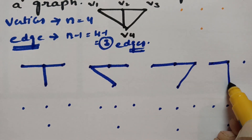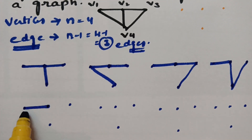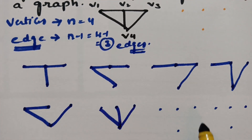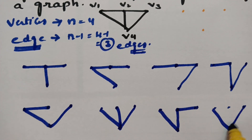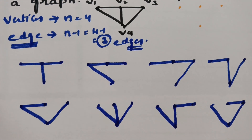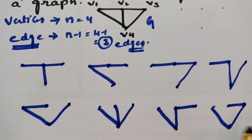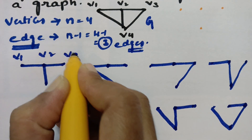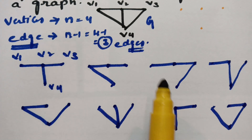Continuing to draw the spanning trees: each one has edges 1, 2, and 3 — three edges total, no loops. This is the main graph G, and these subgraphs are all valid spanning trees following the same properties. In each case we have four vertices V1, V2, V3, V4, and three edges with no loops or circuits or cycles. So these are all the spanning trees of the main graph G.